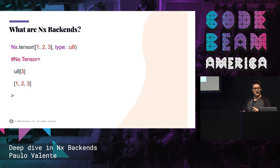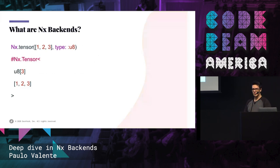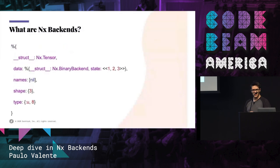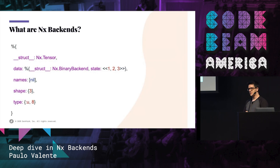This is the basic structure of an NNX tensor. When we instantiate a new tensor, you'll see an inspect output close to that one, which tells you the shape, the type, and a preview of the data contained in the tensor. This is the unwrapped thing — the default implementation, the binary backend, which stores the data inside a binary.